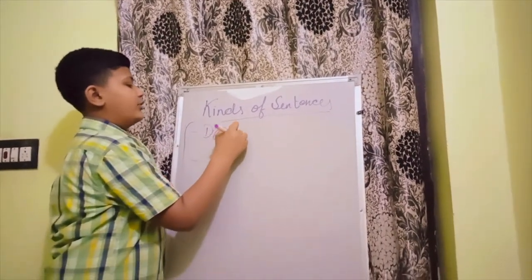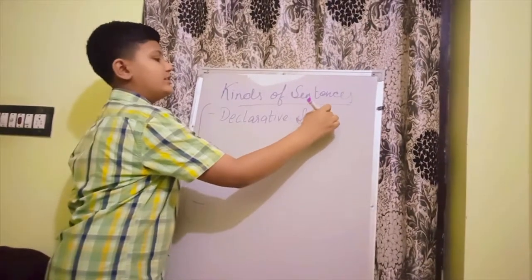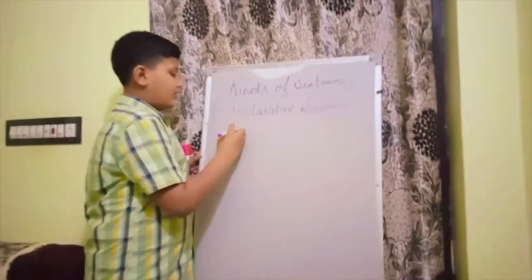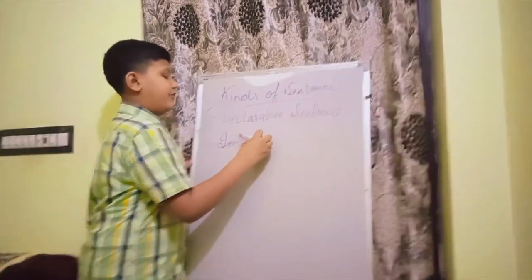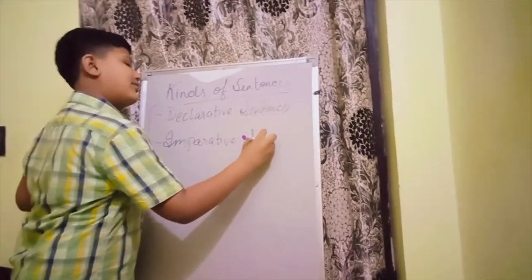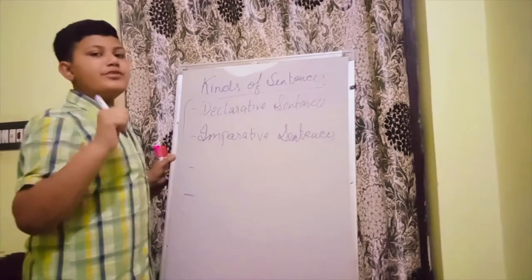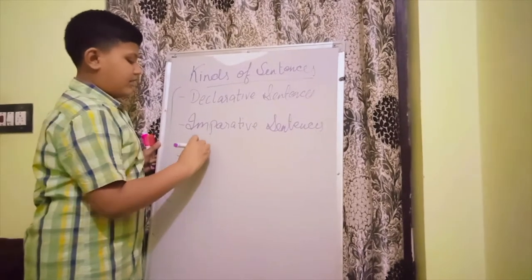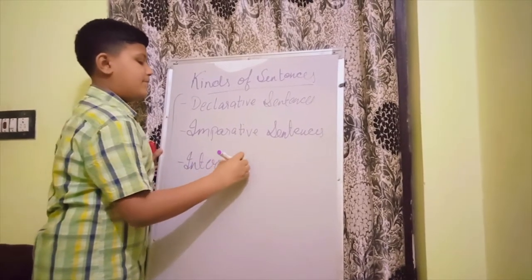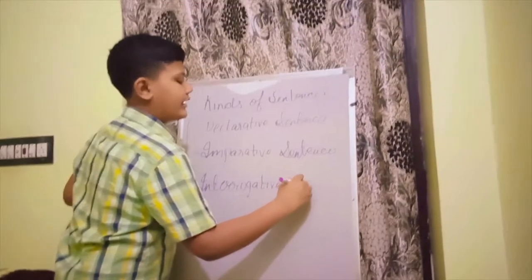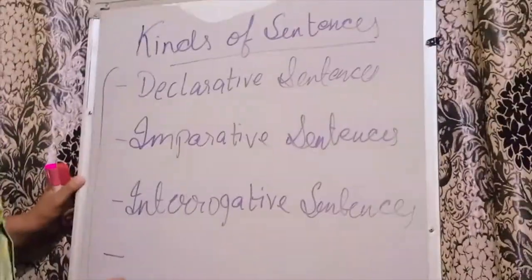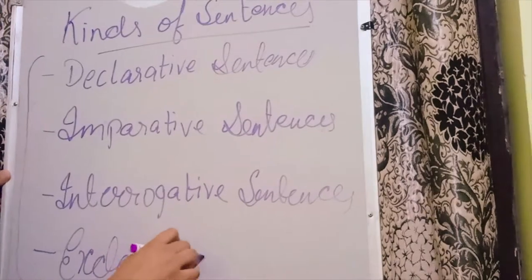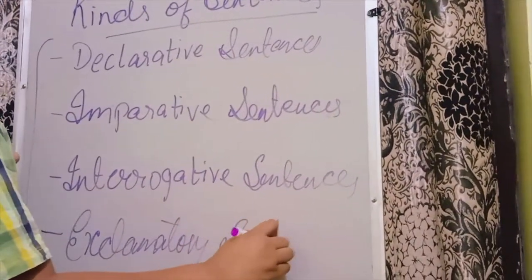First is declarative sentences. The second is imperative sentences. You can stop the video and note down these kinds of sentences. Third is interrogative sentences. And the fourth and the last is exclamatory sentences.